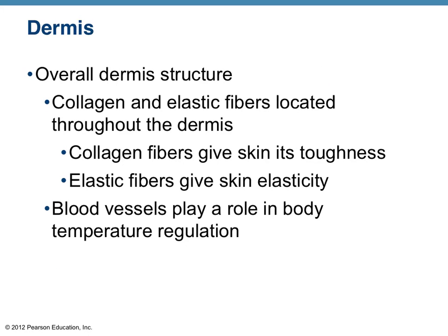Two things to note with the structure of the dermis are the types of fibers involved: collagen fibers and elastic fibers, probably the two most common and important fibers found in the human body. Collagen fibers are very tough and strong — they resist a lot of stretching or movement, so they give skin its toughness. At the same time, elastic fibers give skin its elasticity. Both have a lot to do with the ability to keep the shape and tone of the skin. As we age, the elastic fibers are especially damaged by UV light exposure, and after a while they become less elastic — therefore, you see wrinkles in the skin as human beings age.